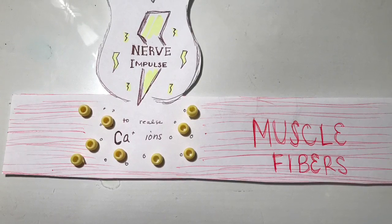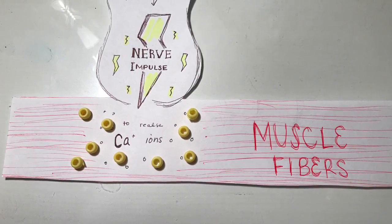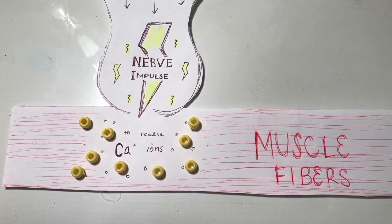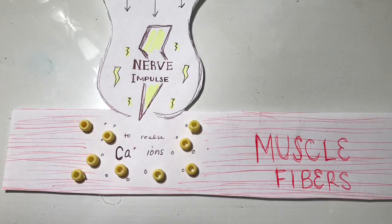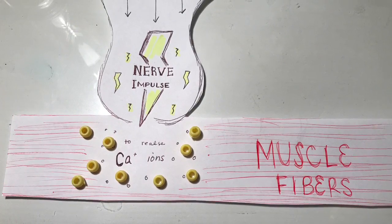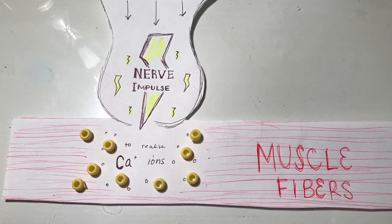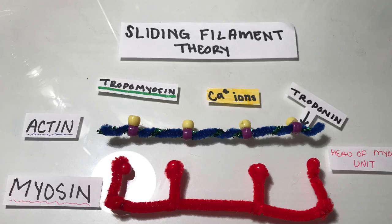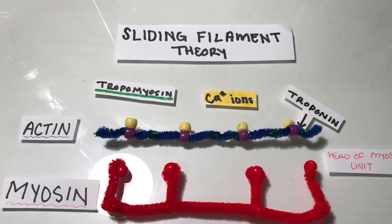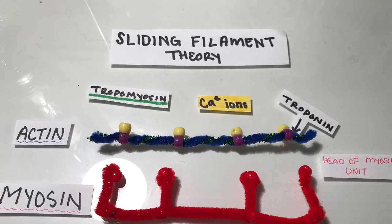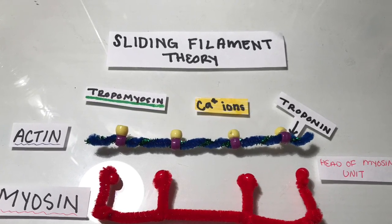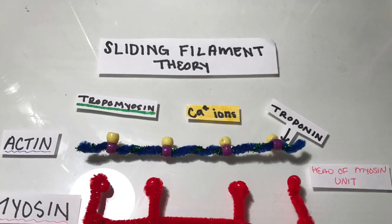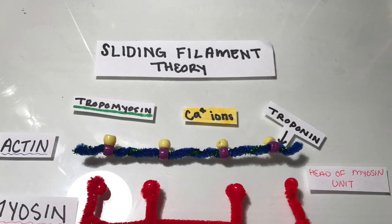For this sliding, the molecular basis is formed by cross-bridge cycling. It is initiated when muscle fibers are stimulated by a nerve impulse and calcium ions are released. The troponin on the actin are bound by calcium ions. This displaces the tropomyosin on the actin filament, exposing the myosin binding sites.